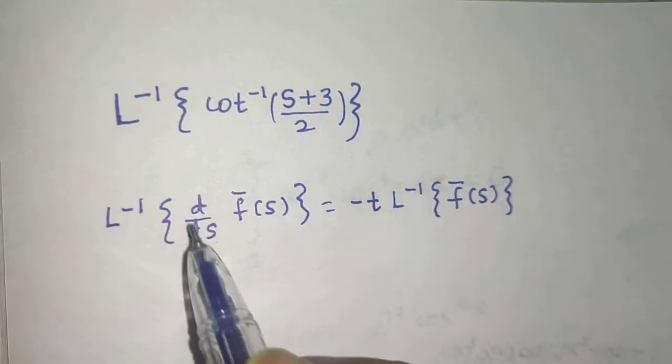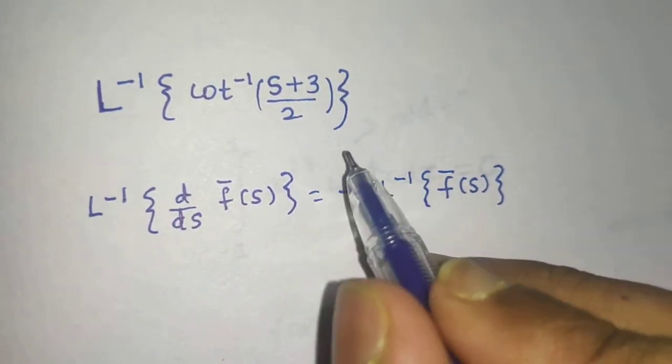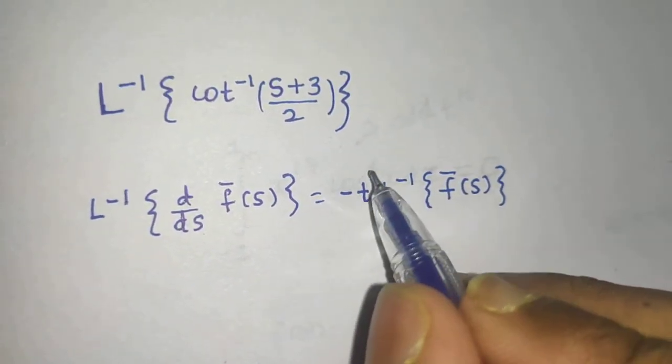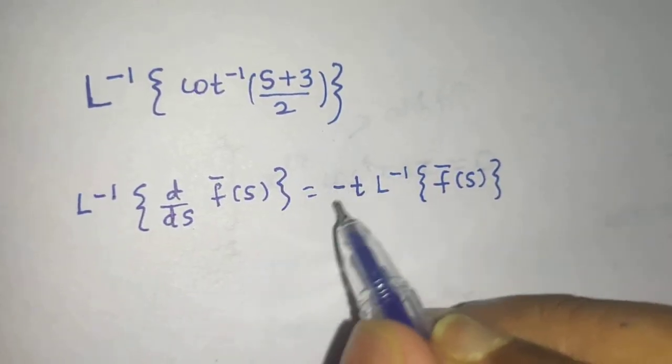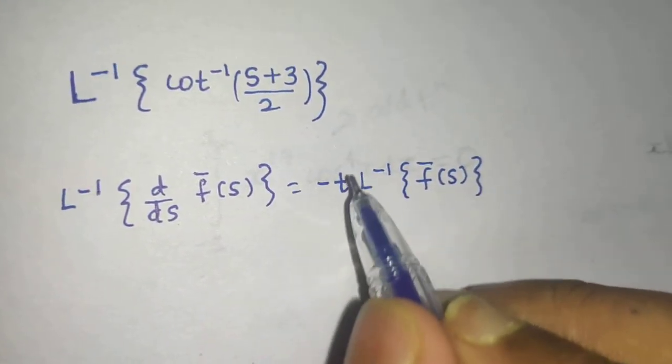For the second derivative, you get (-1)^2 times T^2, which is T^2. For the third derivative, (-1)^3 times T^3, and so on.